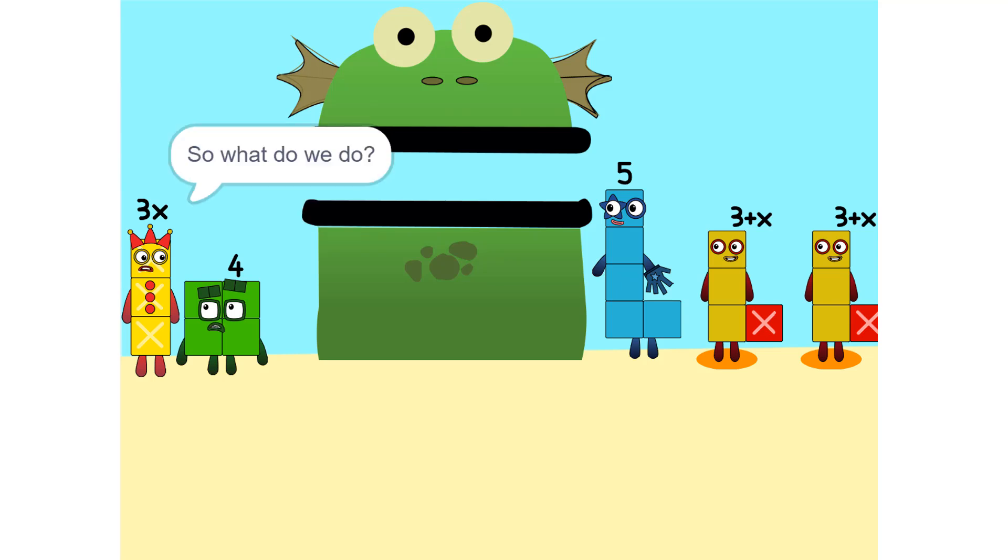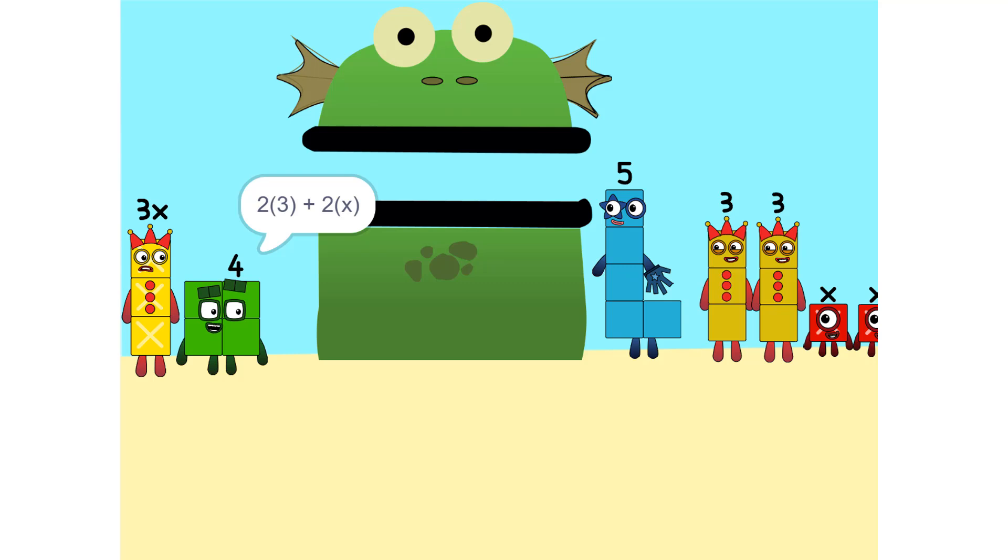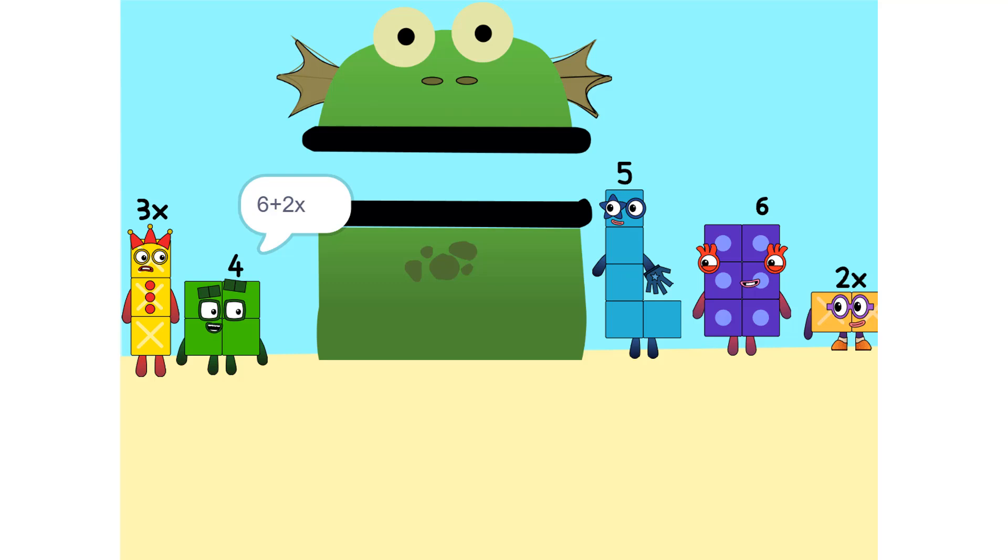Why did that happen? Because the 2 is connected to the 3 plus x. Oh, so it's like adding apples and oranges. You can't. So what do we do? See the 2 times 3 plus x? That's the same as 2 times 3 plus 2 times x, which is 6 plus 2x.